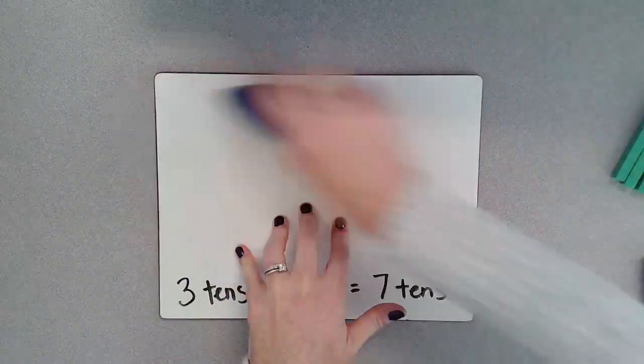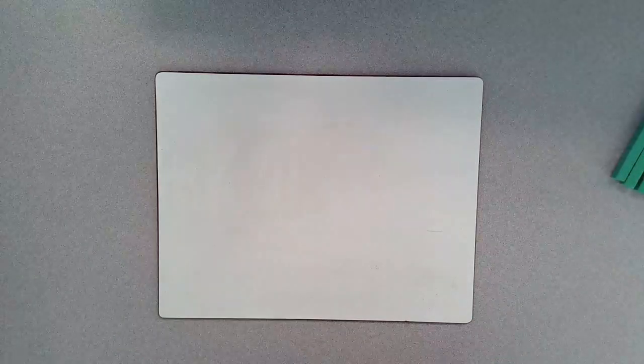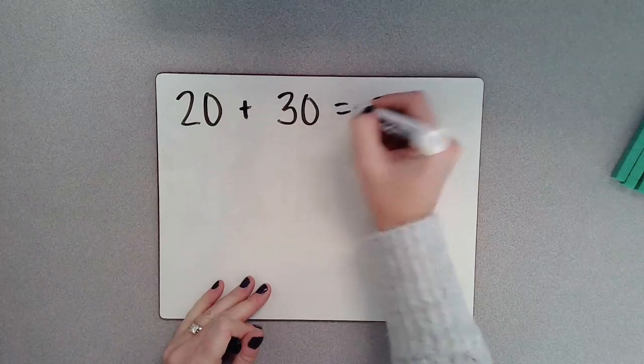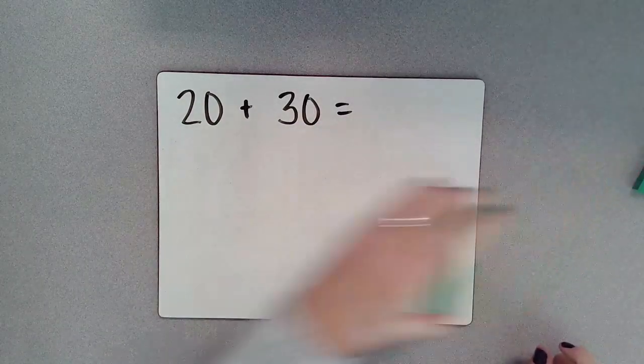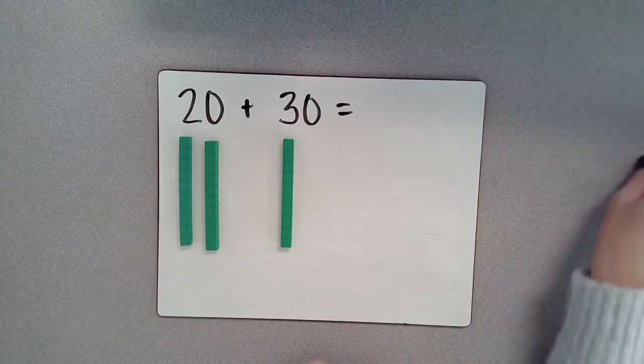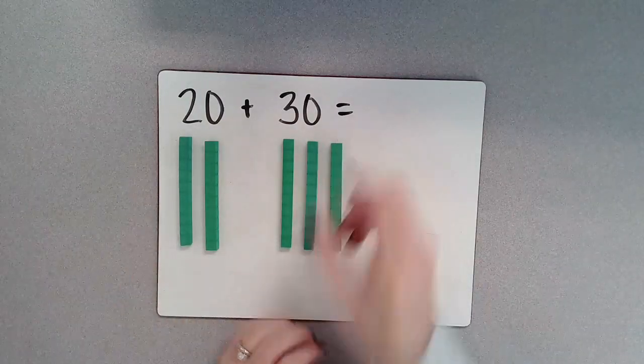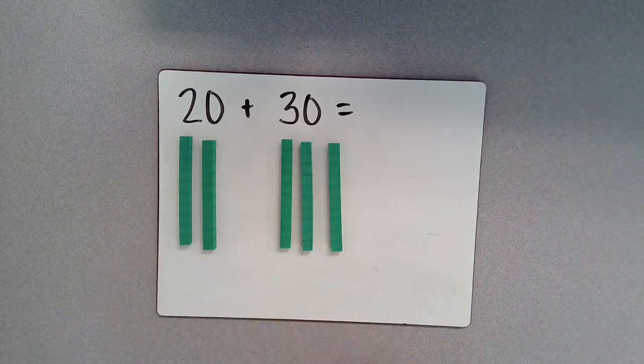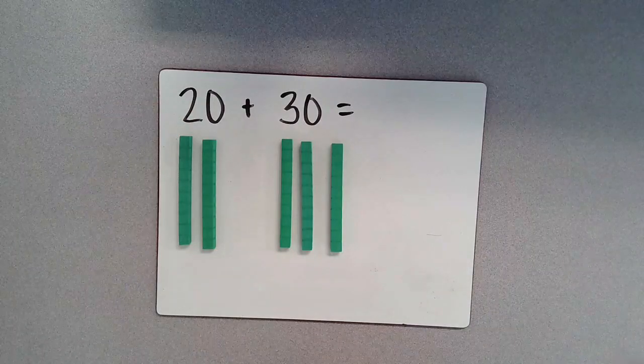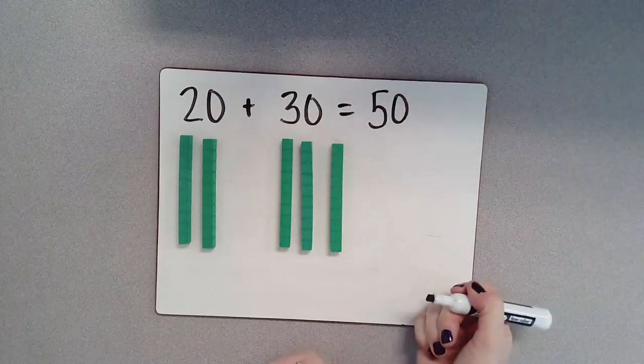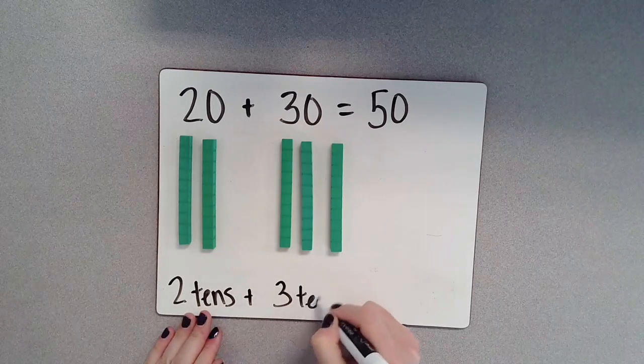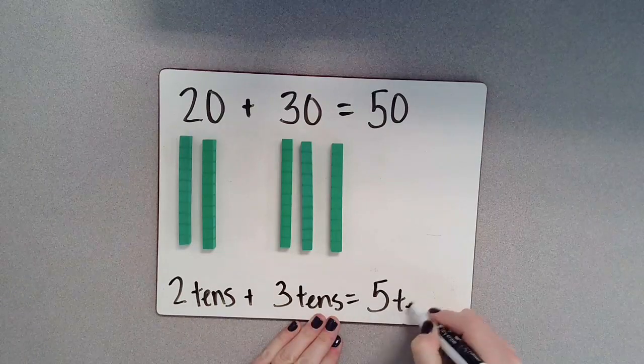Let's do another addition problem. This time let's do 20 plus 30. So again, I'm going to take out my place value blocks, 10, 20. So I have 20 here and 10, 20, 30. So I have my 20 and I have my 30, so let's count up by our 10s. 10, 20, 30, 40, 50. So I know that 20 and 30 together give me 50.